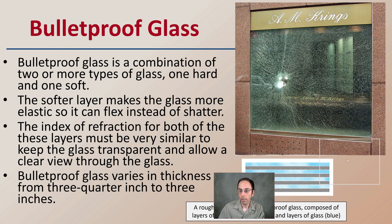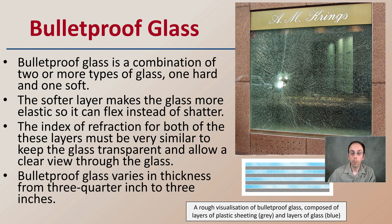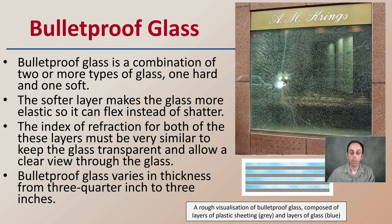Then we have bulletproof glass, which, as the name implies, is designed to resist the impact from bullets. It achieves this by a combination of two or more types of glass — one hardened and one soft. The softer layer makes the glass more elastic so it can flex instead of shattering. The index of refraction for both layers must be very similar to keep the glass transparent and allow a clear view. This is why we won't be able to quickly identify bulletproof glass, because it should look like normal glass. It varies in thickness from three-quarters of an inch to three inches depending on how many layers there are.